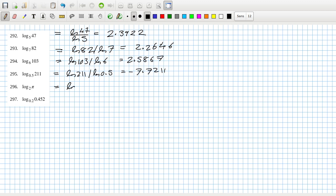Next one's a bit funny, ln pi over ln 2, that one is 1.6515. And finally that one is ln 0.452 over ln 0.2, that one is 0.4934, which is correct.